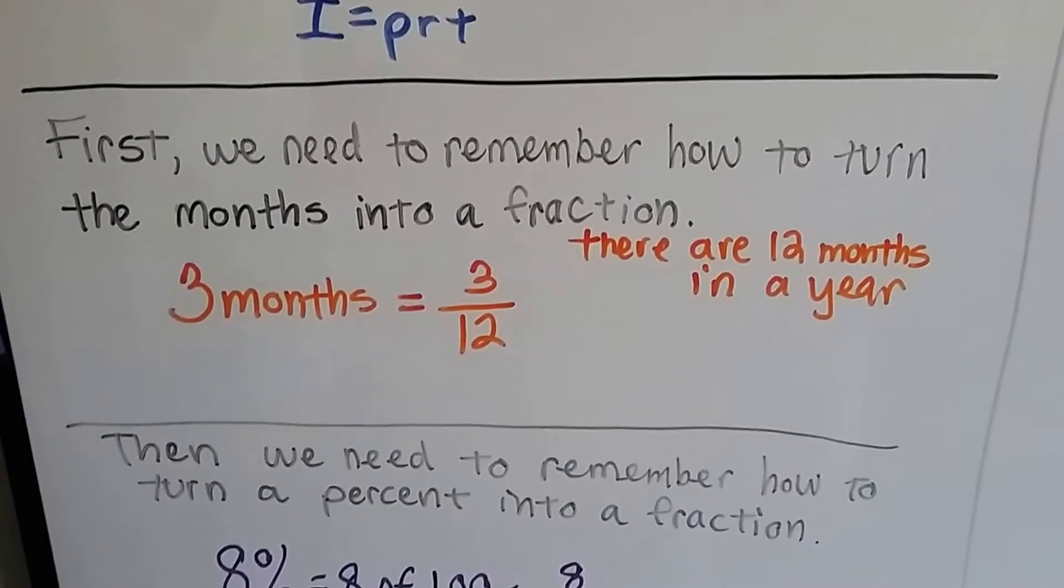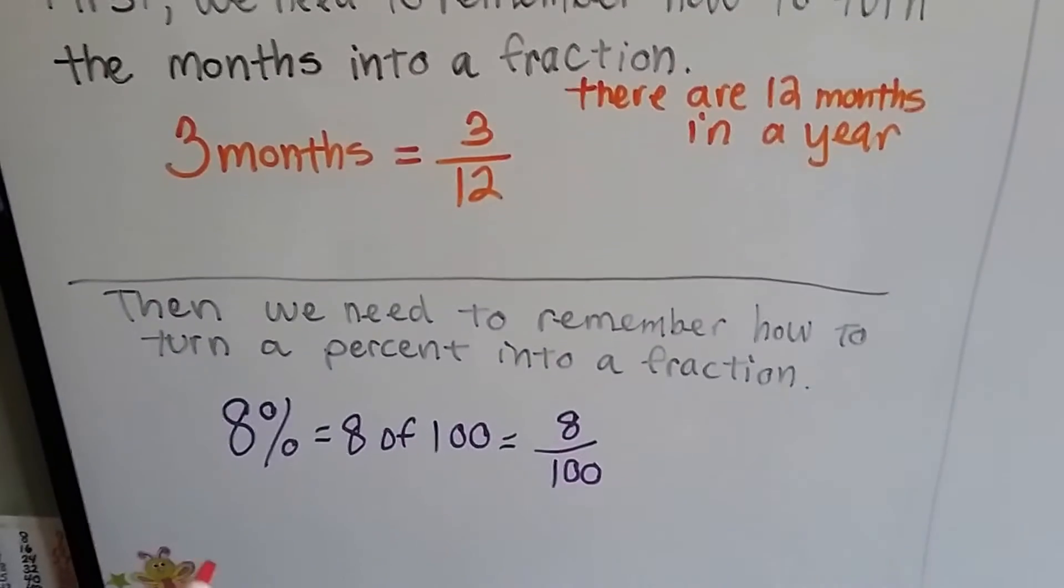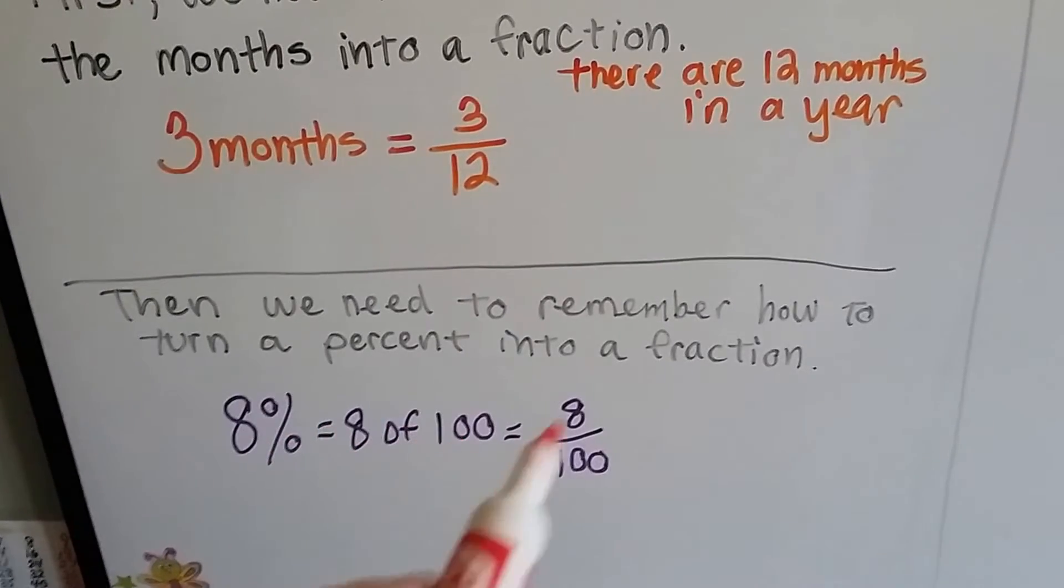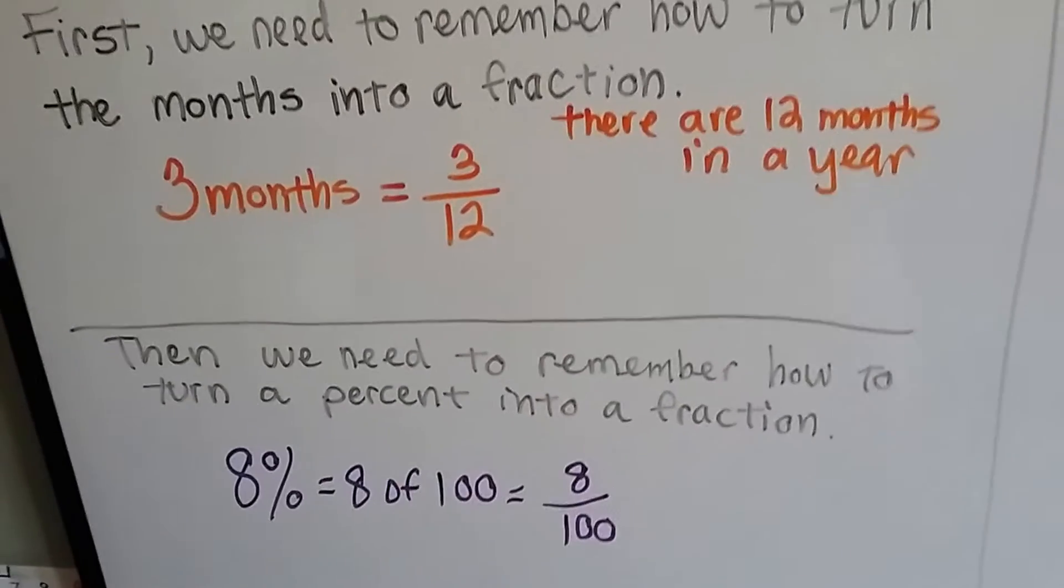Then we need to remember how to turn a percent into a fraction. Eight percent is equal to eight of a hundred, so it's eight one hundredths. Now we're ready to go.